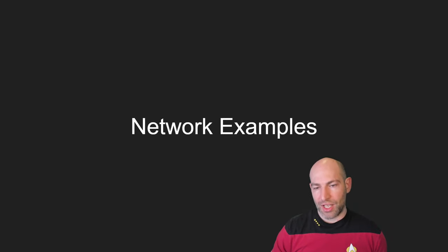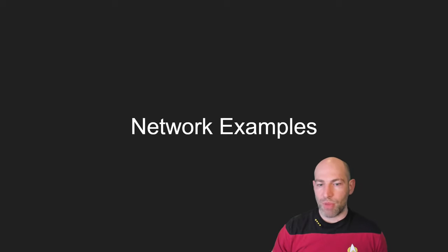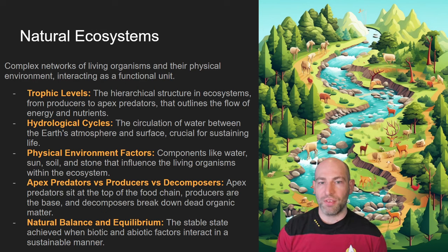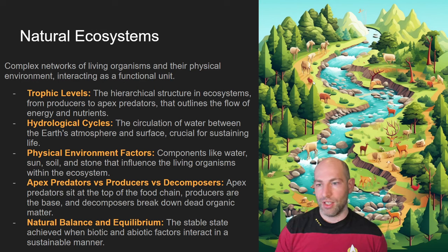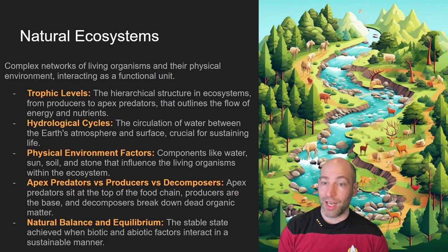That was a lot of information at once, so you might need to watch this video a couple of times and look up some of these terms. Now let's get into network examples. First, natural ecosystems. Natural ecosystems are composed of many nodes within an environment and a lot of connections between those nodes. In a forest environment, you have trophic levels such as predators versus autotrophs versus heterotrophs — carnivores at the top, herbivores in the middle, and decomposers, plants, and fungus at the bottom.